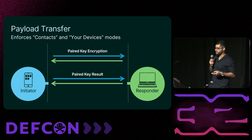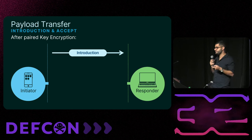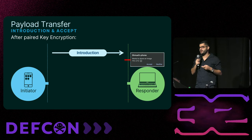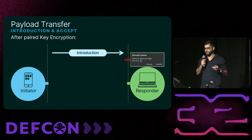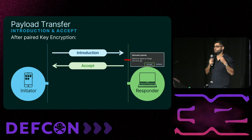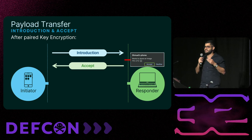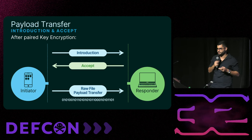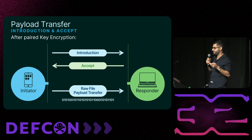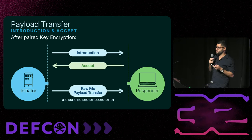After the visibility mode verification stage, the initiator that wants to send a file sends an Introduction packet. As a result, the responder is prompted with a file introduction dialogue on the computer saying the initiator would like to send the file. To receive the file, the responder simply presses the accept button, which causes QuickShare to send an Accept packet to the initiator. After acceptance, the initiator sends the file using a payload transfer packet and the transfer is complete.